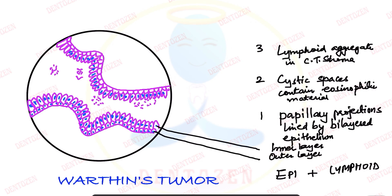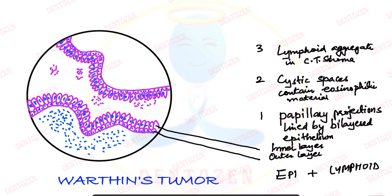The outer layer is away from the cystic space, on the outside — that's why it's called the outer layer. The second component is the lymphoid aggregates found in the connective tissue stroma. We can draw lots of lymphoid aggregates here in the connective tissue, and within these aggregates we can also draw some blood vessels.